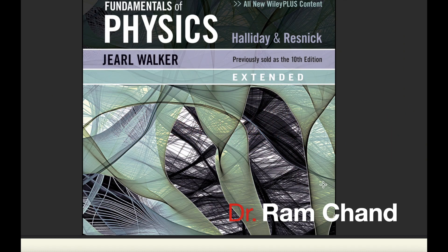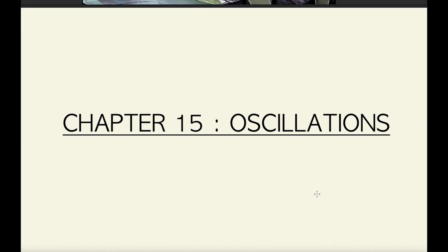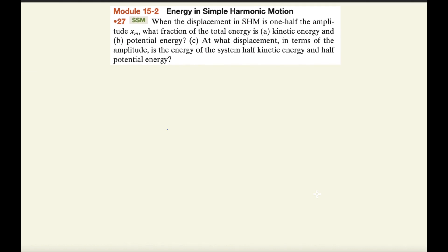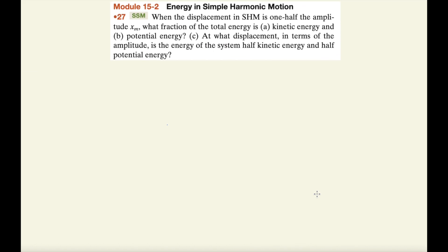Fundamentals of Physics 10th Edition, Chapter 15: Oscillation. Today we will solve problem number 27, Energy in Simple Harmonic Motion. When the displacement in SHM is one half the amplitude XM, what fraction of total energy is (a) kinetic energy and (b) potential energy? (c) At what displacement in terms of amplitude is the energy of the system half kinetic and half potential?